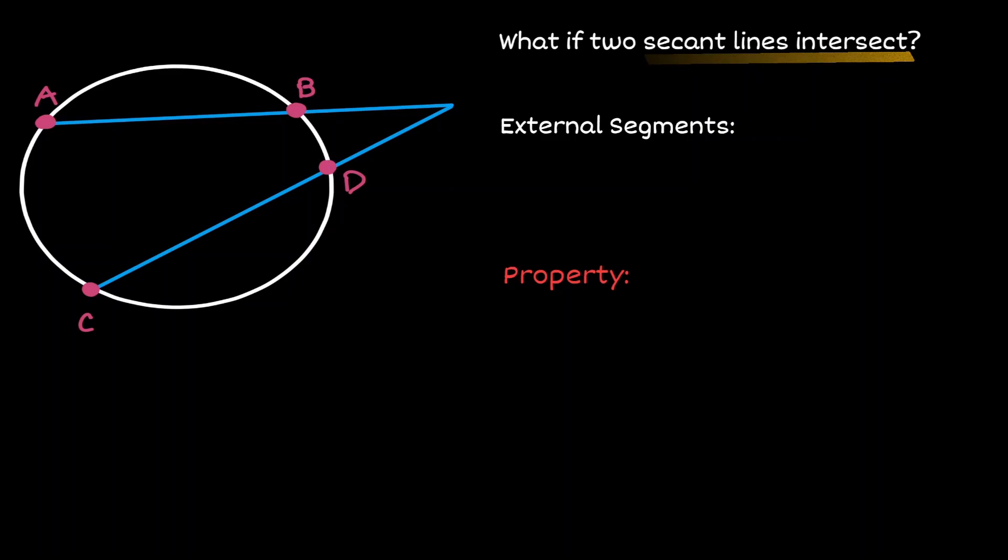The point where both secant lines intersect with each other, let's call it P. Now we can categorize different segment lines.